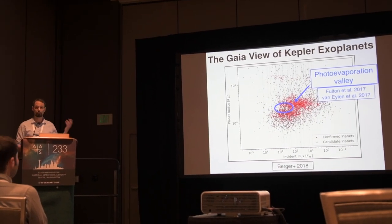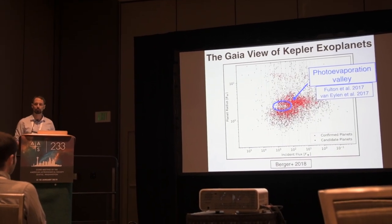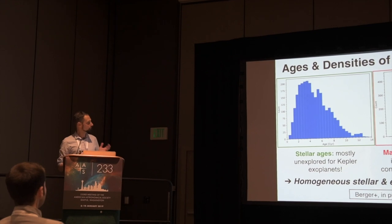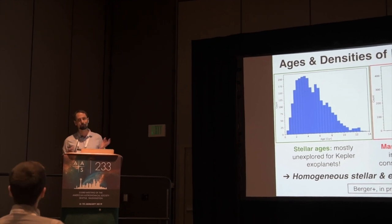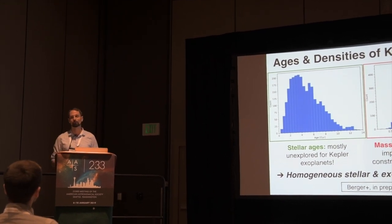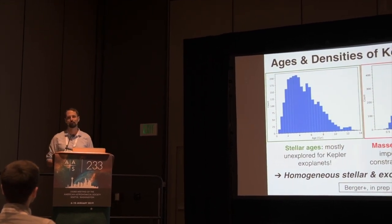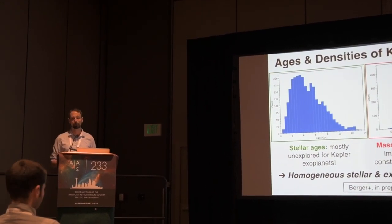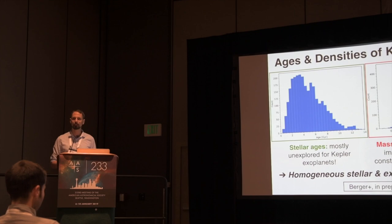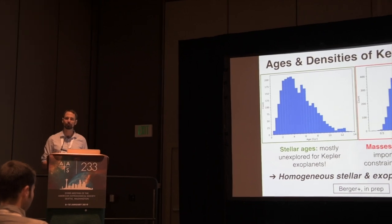But with Gaia, we can now see this for the entire planet population. The reason why stellar age is mostly unexplored as a property to investigate for exoplanets is that stellar ages are really hard.